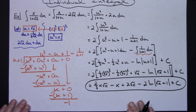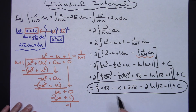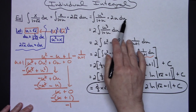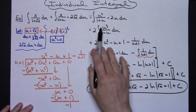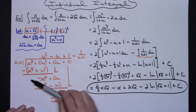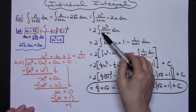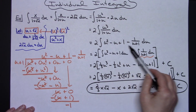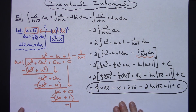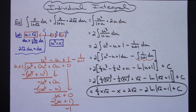This problem demonstrates a variety of substitutions needed to handle a tricky integral. The key insight is to use long division to convert the rational function into an equivalent expression that is much easier to integrate. Thanks for watching, and don't forget to subscribe to the channel.